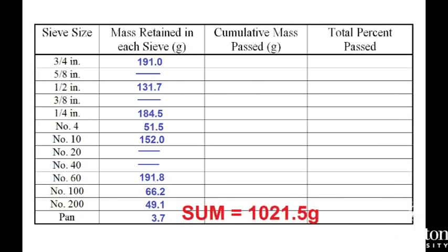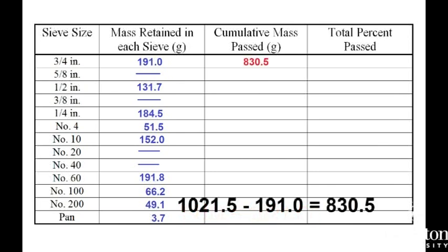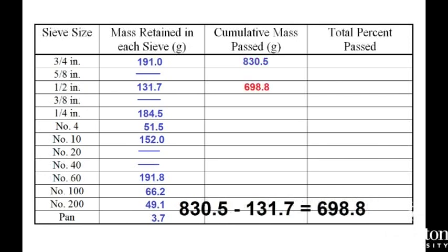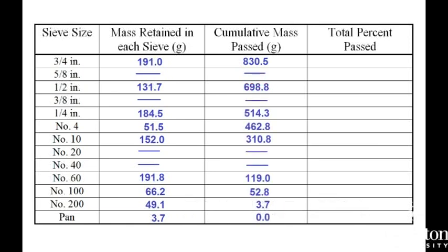Next, calculate the cumulative mass passing each sieve. Starting from the top and working downward, the cumulative mass passed at each sieve is the mass passed by the next largest sieve minus the mass retained by that sieve. For example, the total mass of the sample was 1021.5 grams. The mass retained by the largest three-quarter inch sieve was 191.0 grams, which means that the mass passing this sieve is 830.5 grams. For the half-inch sieve, 131.7 grams was retained, which means that the mass passing this sieve was 698.8 grams. When you've done this, make sure your cumulative mass passed at the pan is 0 grams. If it's not, you have made a mistake in your calculations.